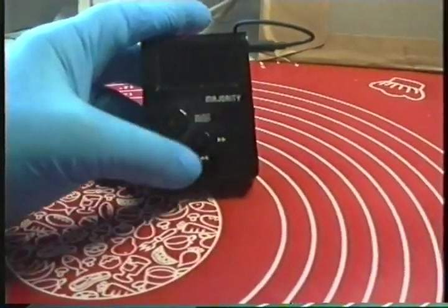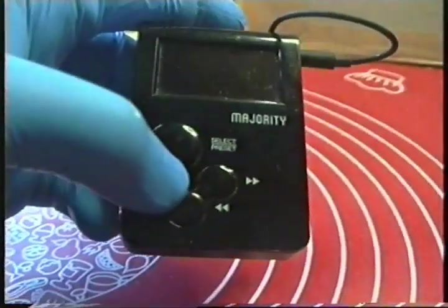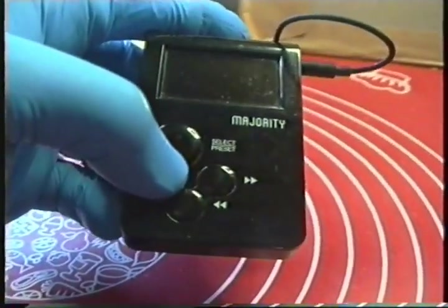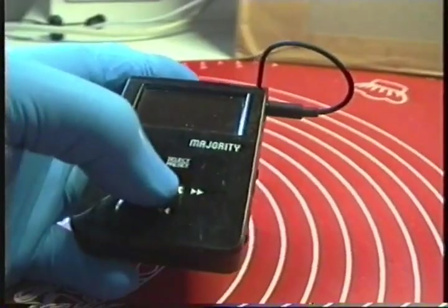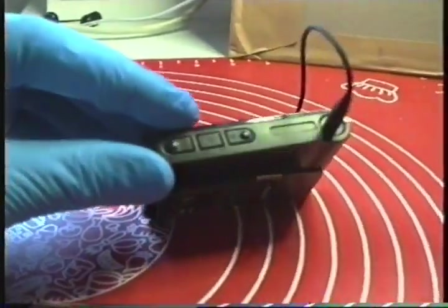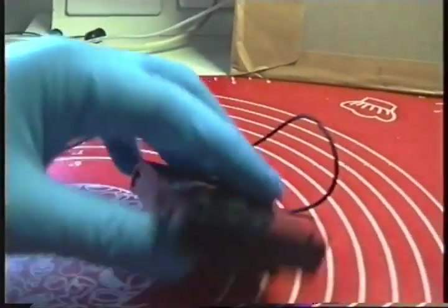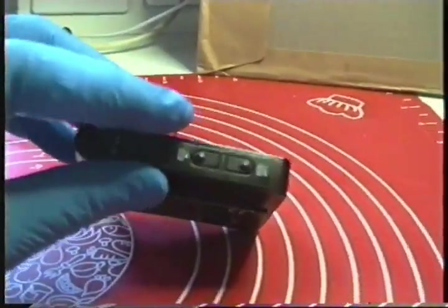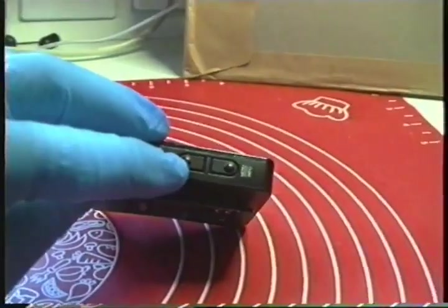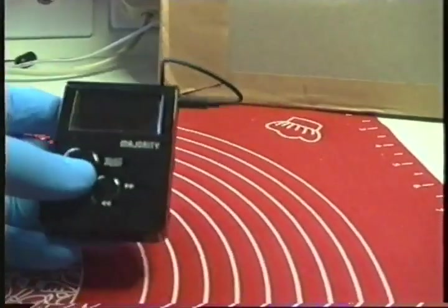The controls: there are three buttons here in the front. There is select preset button, next and back. Here is power on, volume up, volume down. Here is a button to change the mode and here is a button to access the menu.